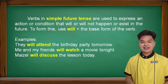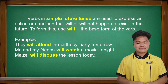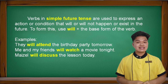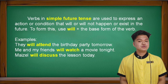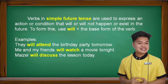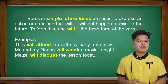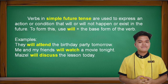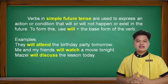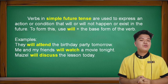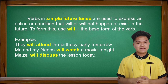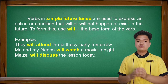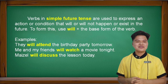The third one is verbs in simple future tense. These are used to express an action or condition that will or will not happen or exist in the future. To form this, use 'will' plus the base form of the verb. For example: they will attend the birthday party tomorrow — the birthday party will happen tomorrow, so it is in simple future tense, using 'will attend.' Also: me and my friends will watch a movie tonight. And: Maisel will discuss the lesson today. In simple future tense, we just use 'will' plus the base form of the verb.